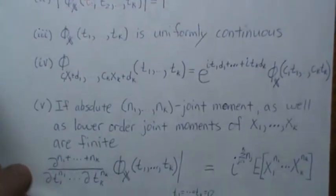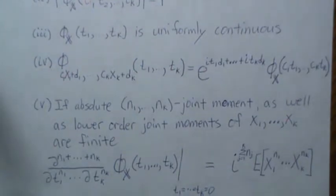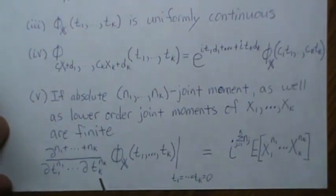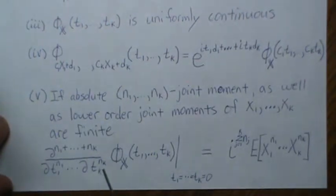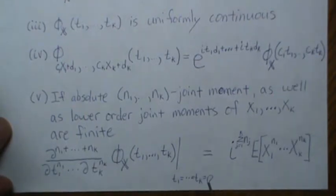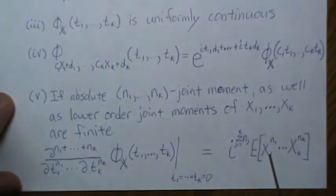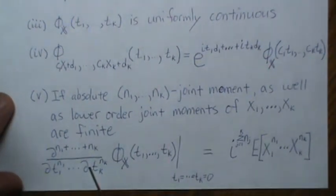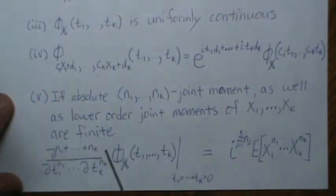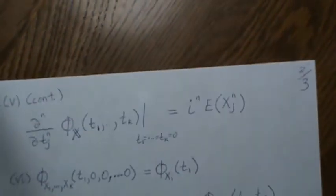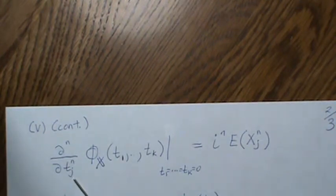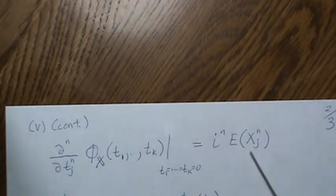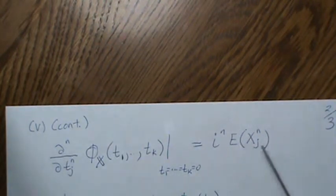And then assuming that the absolute joint moments as well as any lower order joint moments are finite, then we can start differentiating. And so if we differentiate with respect to the T's, so N1 times and NK times, and then re-evaluated at zero, then we get the expected value, the joint moment, and that it's raised to the powers of however many times you differentiated or took the partial derivative with respect to that variable. And it's I to the N, the sum of these N1 through NK.